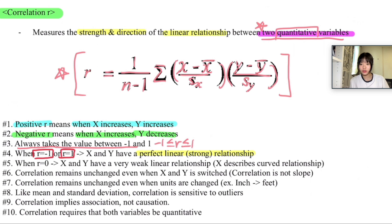But if r is equal to 0, we're going to say that x and y have a very weak linear relationship, and you can also say that x describes a curved relationship over here. It's important to memorize that when r is 0, it implies a very weak linear relationship.